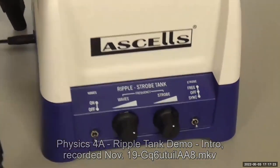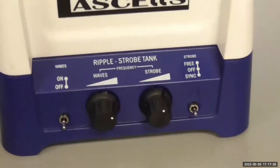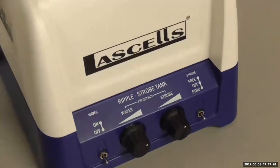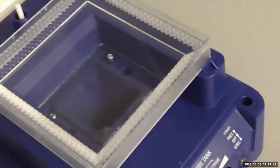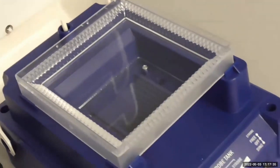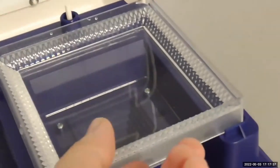This is the demo video for what's called the Ripple strobe tank. It has a device that will provide the water waves and it has a strobe light. So a bit of a warning, there will be flashing lights from time to time.